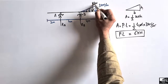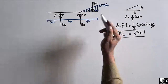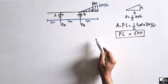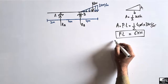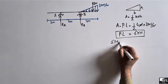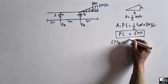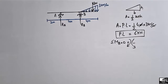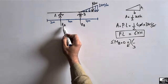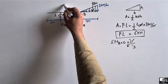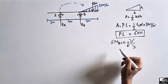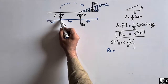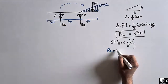The first step was to convert the uniformly varying load into a concentrated load using the area of the triangle. Now, to find the support reactions, we take the summation of moments at point B equal to zero. Clockwise moments are taken as positive and counter-clockwise as negative. The reaction RA creates a clockwise moment about B, so it is positive: RA multiplied by its moment arm, which is the distance from A to B, equal to 4 meters.